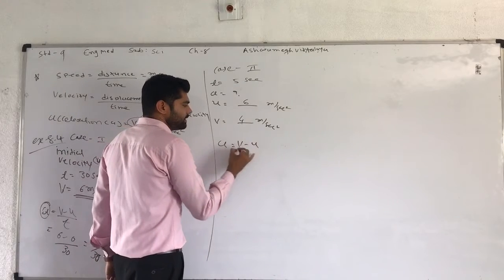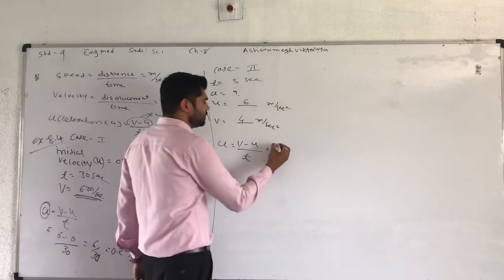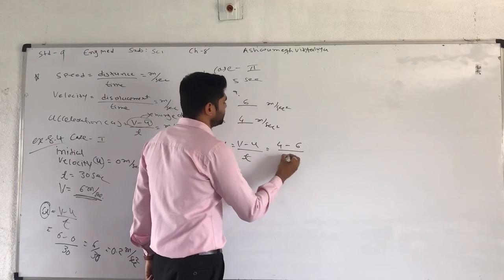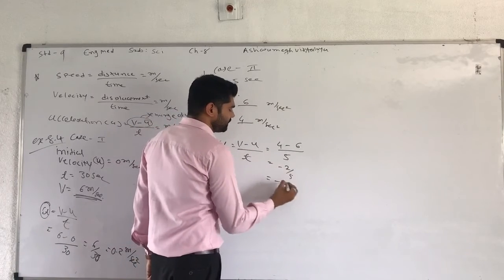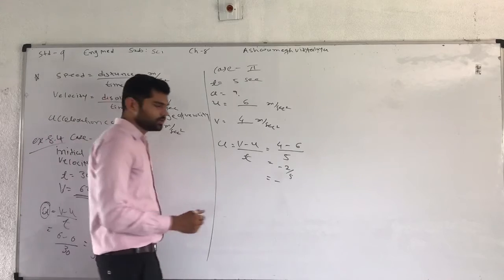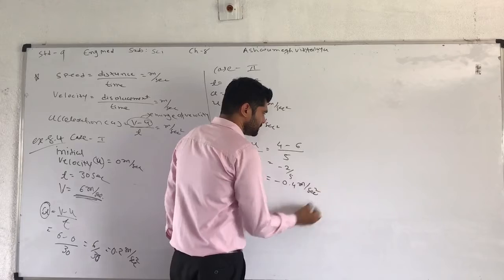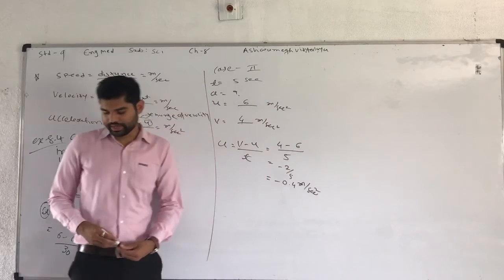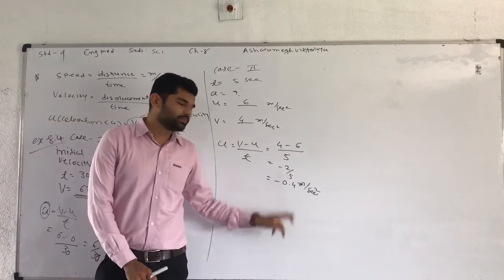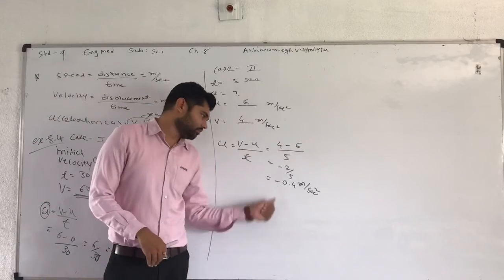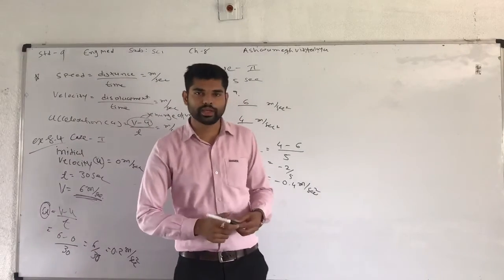Therefore A is equal to V minus U divided by t. Value of V is equal to 4 minus 6 divided by time is 5 seconds. So minus 2 divided by 5, answer is negative minus 0.4 meter per second square. Here minus sign, minus acceleration is the retarded motion.